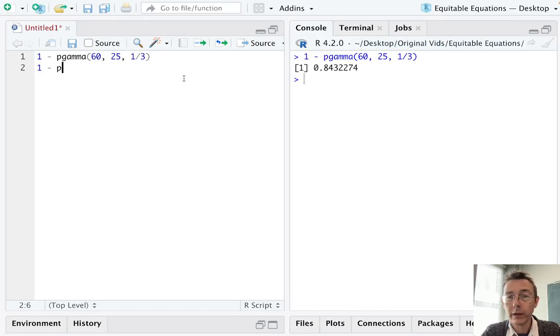Of course, we could do this using the parameter theta. So let's get that same answer. The time we're interested in, 60 minutes, and the shape parameter alpha do not change, so I leave those the same. The scale parameter is the thing we're going to specify now. It's going to be equal to 3, the reciprocal of lambda. Same number as we would expect.